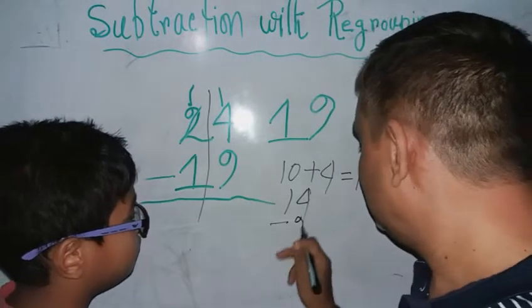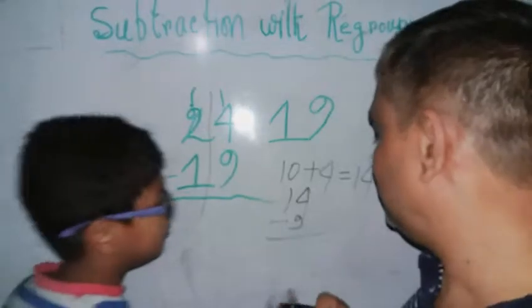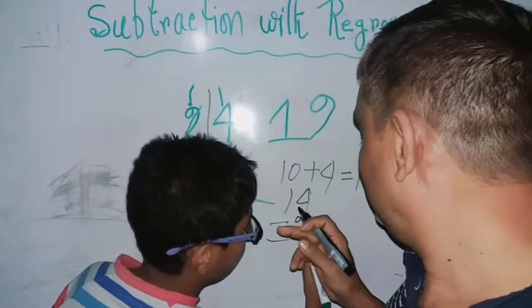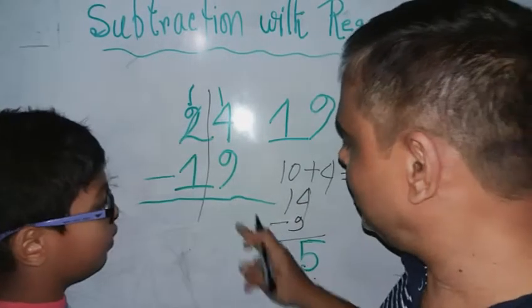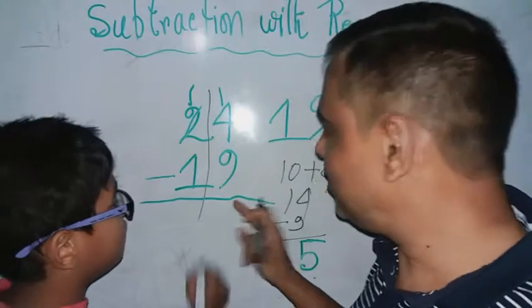5, right down here. 5, well done! So here will be 5 in ones place. Here will be 5, right down 5.